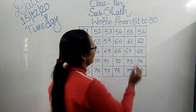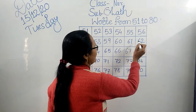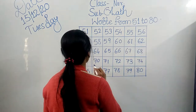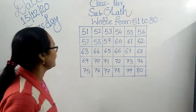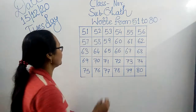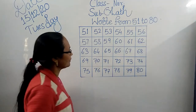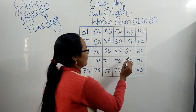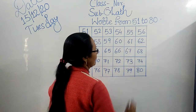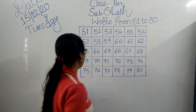6, 0 — 60. 6, 1 — 61. 6, 2 — 62. 6, 3 — 63. 6, 4 — 64. 6, 5 — 65. 6, 6 — 66. 6, 7 — 67.